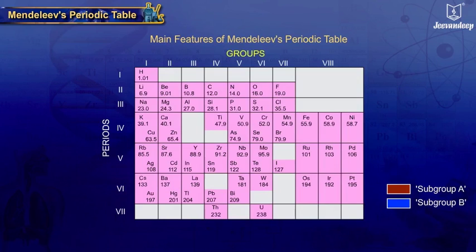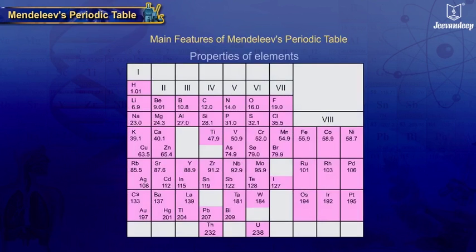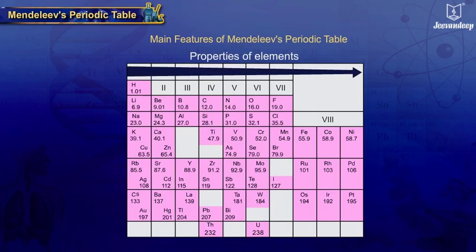Each group from 1 to 7 has 2 subgroups, A and B. The properties of the elements in the same period change gradually from left to right.